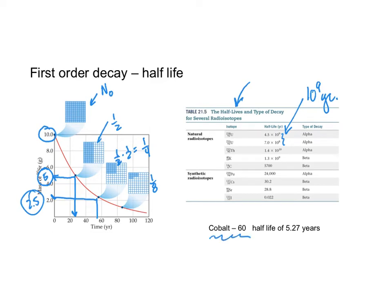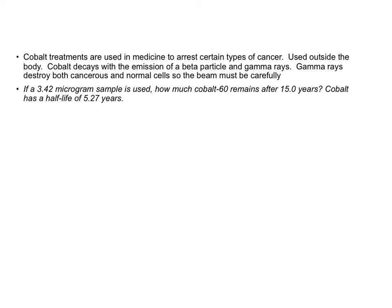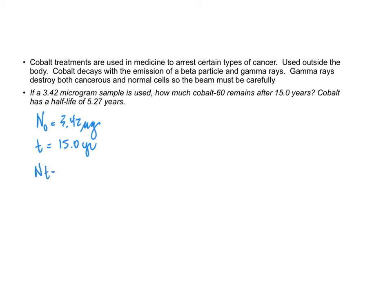The problem we're going to do next is about cobalt-60, typical of the kind of problem you might see. Cobalt treatments are used in medicine to treat cancer. Cobalt decays with the emission of a beta particle and a gamma ray, and it's the gamma rays that are very dangerous because they destroy both cancerous and normal cells, so you really have to carefully aim the beam. My initial amount is 3.42 micrograms. We want to know how much remains after 15 years, and it has a half-life of 5.27 years.